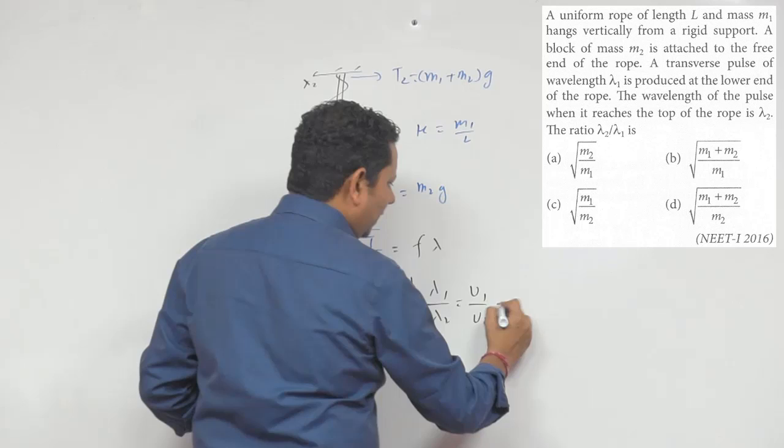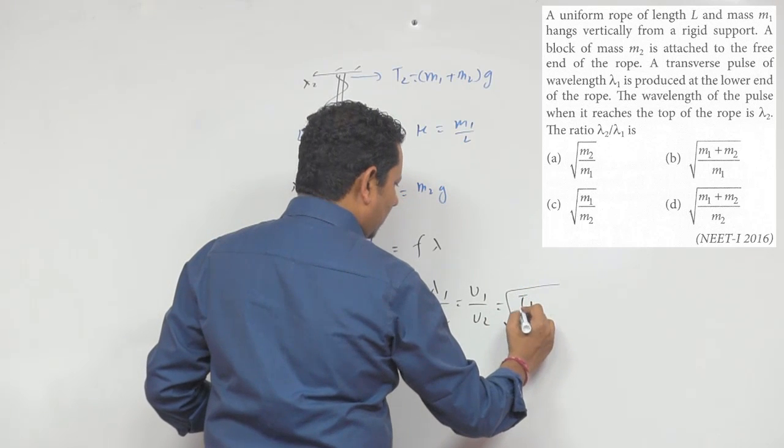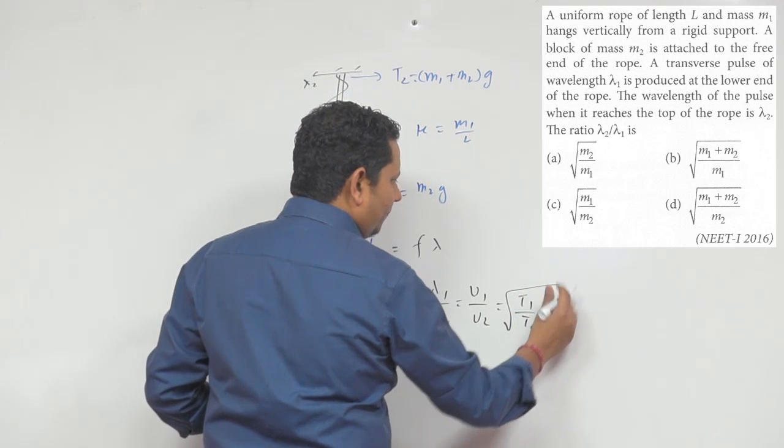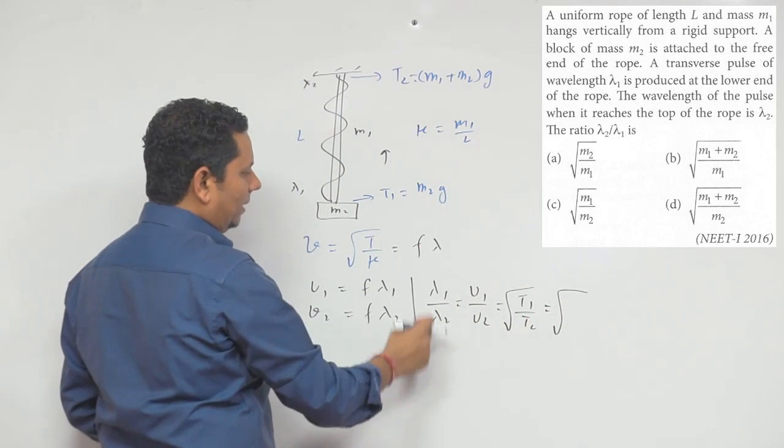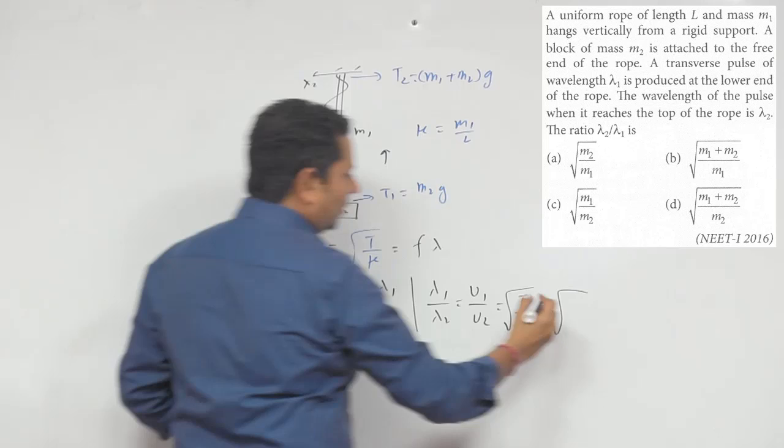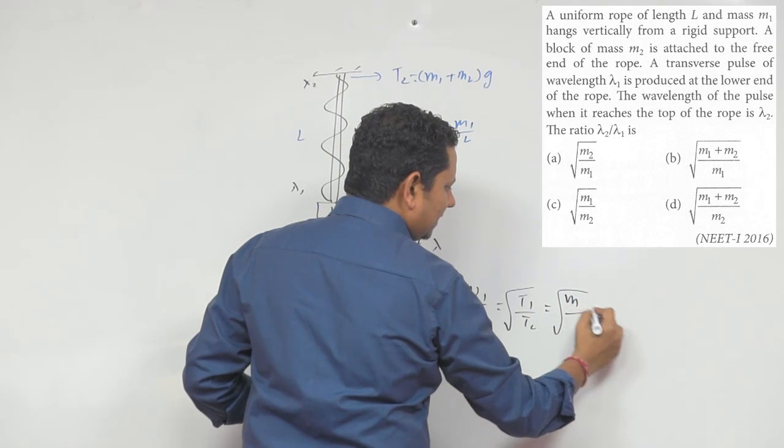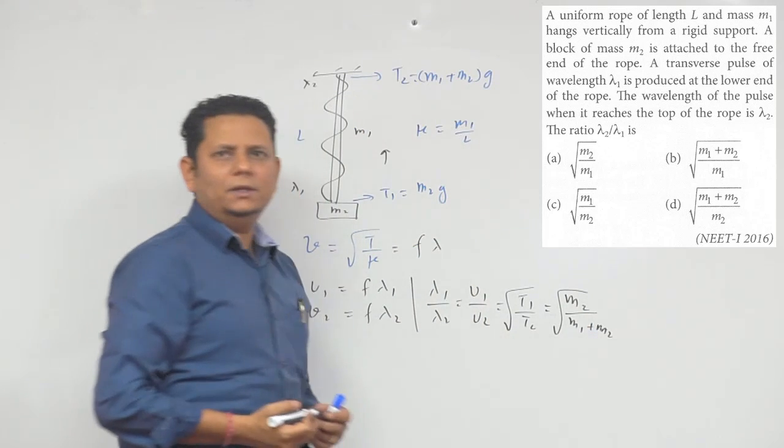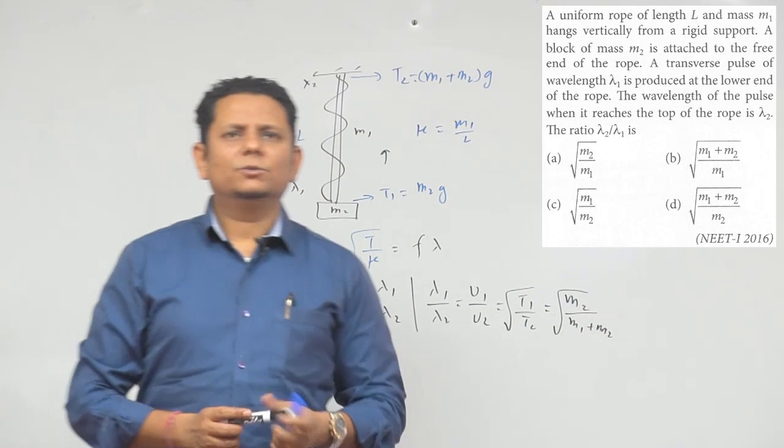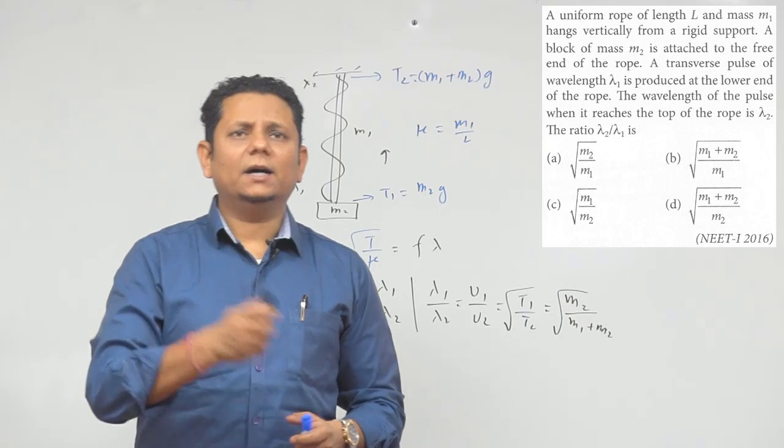Velocity is directly proportional to the square root of tension. So this equals square root of T1 divided by T2. We already know T1 is M2g and T2 is M1 plus M2 times g. Therefore, lambda 1 by lambda 2 equals the square root of M2 divided by M1 plus M2.